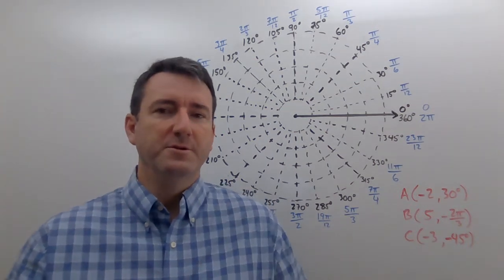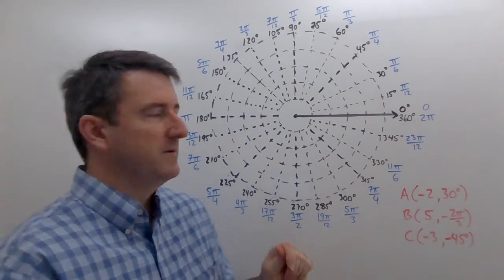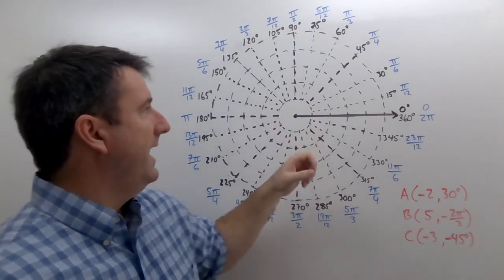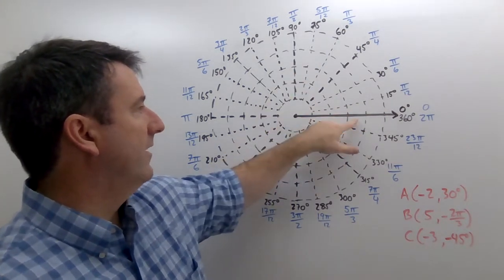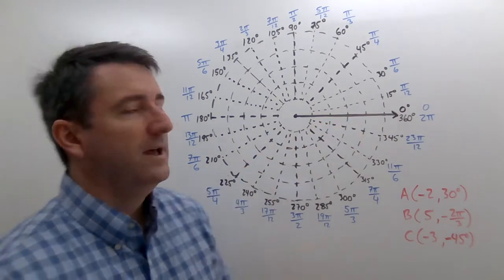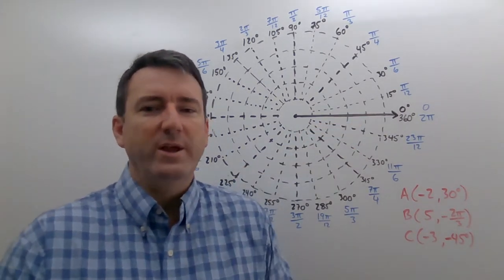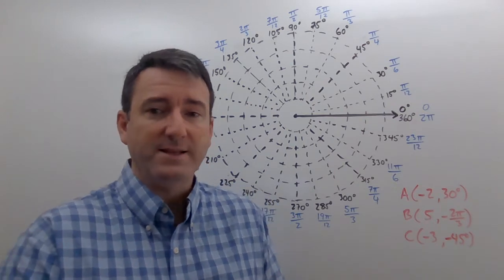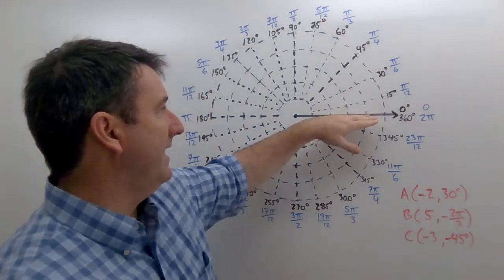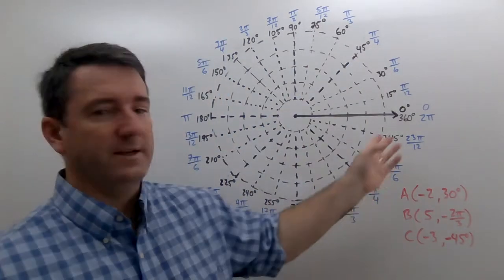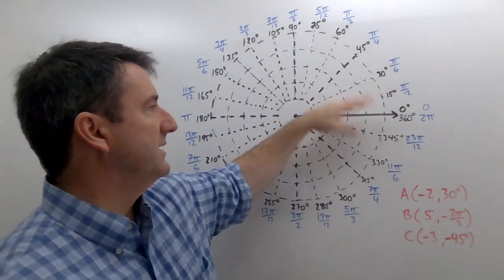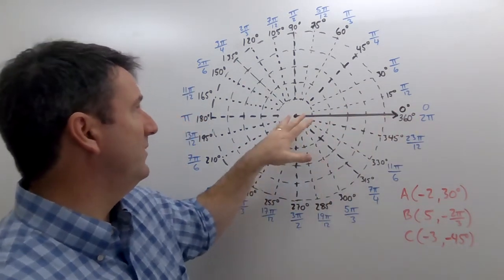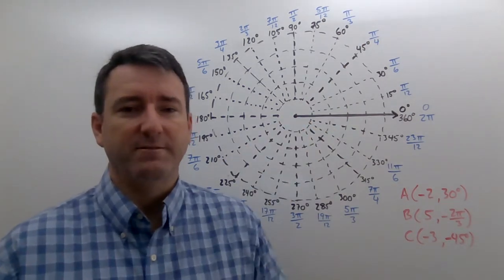All right, in the last lesson, we introduced polar coordinates, and we said that polar coordinates are given by the distance from this center point, which we call the pole, and the angle from this polar axis. Notice that we could give any polar coordinate, any position in the entire plane, we could describe using positive polar coordinates. Our angle, we can give any direction by giving an angle between 0 and 360 degrees, or between 0 and 2π radians.